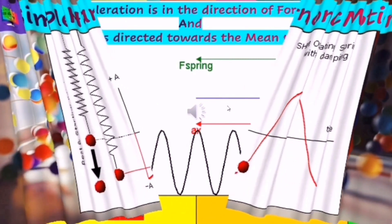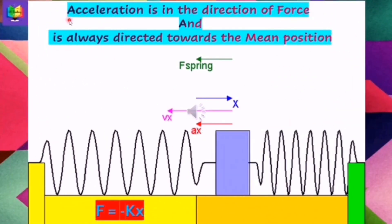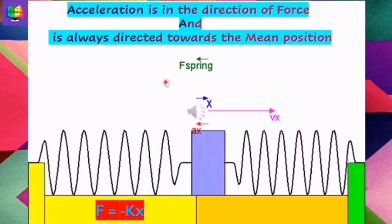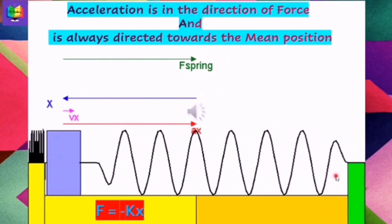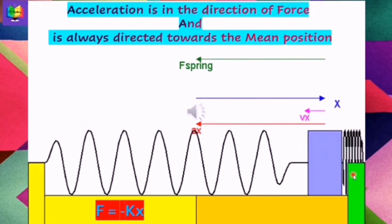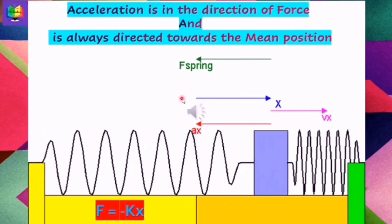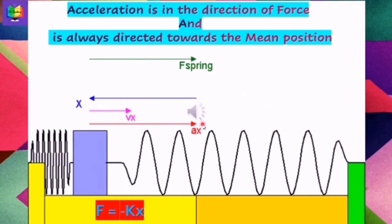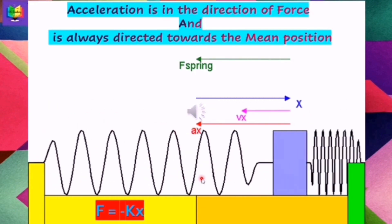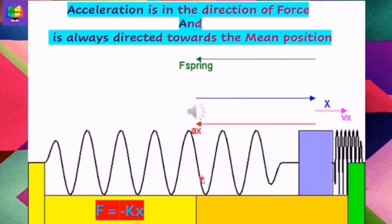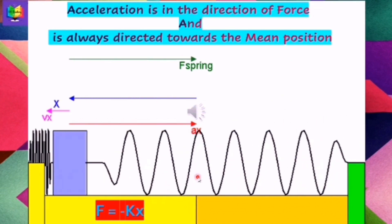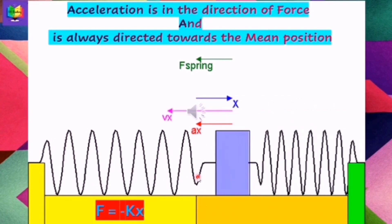One example of simple harmonic motion is a mass attached to a spring. The vibration of a mass attached to a spring is a specific example of simple harmonic motion. At the extreme position, force is greatest, and from Newton's second law of motion, force is proportional to acceleration, so acceleration is also greatest at the extreme position and is always directed towards the mean or equilibrium position. At the mean or equilibrium position, acceleration is zero and velocity has its maximum value.